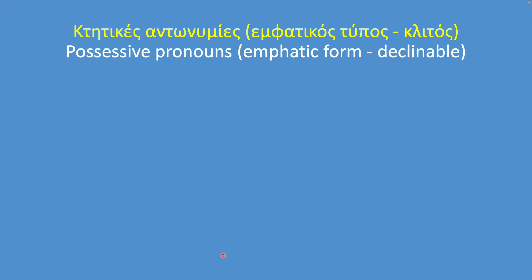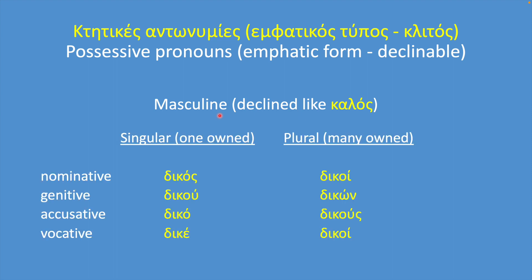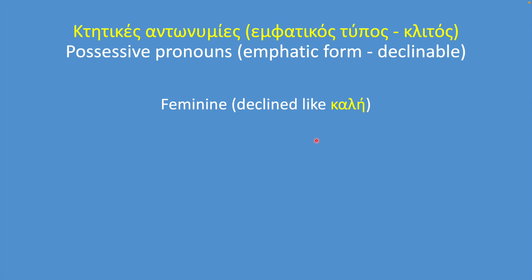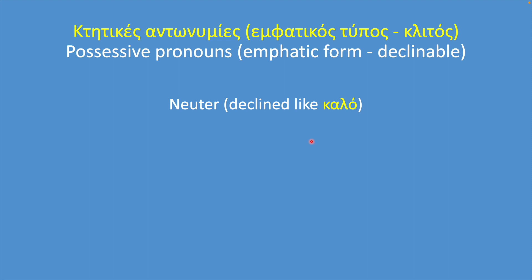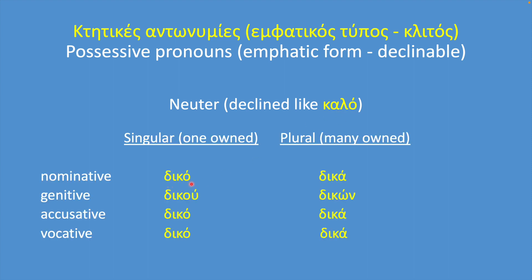Here we can see how we decline the emphatic type. As we said, it's declined like καλός. Masculine singular: δικός, δικού, δικό, δικέ. Plural: δικοί, δικών, δικούς, δικοί. The feminine form, declined like καλή — singular: δική, δικής, δική, δική. Plural: δικές, δικών, δικές, δικές. And the neuter, declined like καλό — singular: δικό, δικού, δικό, δικό. Plural: δικά, δικών, δικά, δικά.